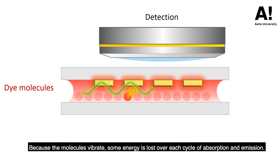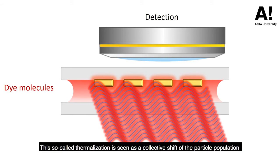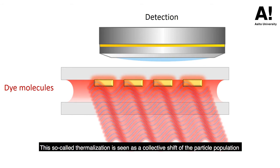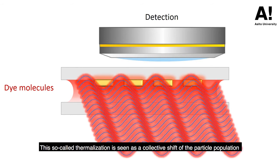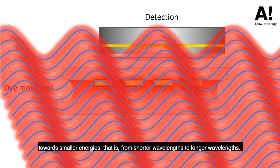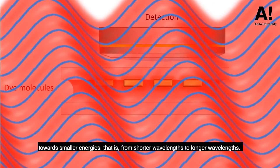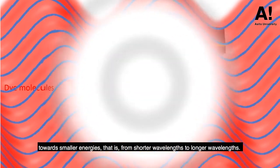Because the molecules vibrate, some energy is lost over each cycle of absorption and emission. This so-called thermalisation is seen as a collective shift of the particle population towards smaller energies, that is, from shorter wavelengths to longer wavelengths.